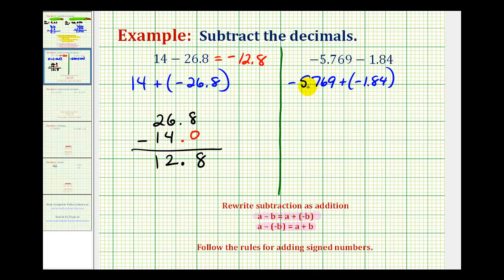The absolute value of negative 5.769 is positive 5.769, and the absolute value of negative 1.84 is positive 1.84. We probably want to put a zero here in the thousandths place value, then bring the decimal down into our sum, and now we can add. We have nine, this would be 10, carry a one, this would be 16, carry a one, and this would be seven.